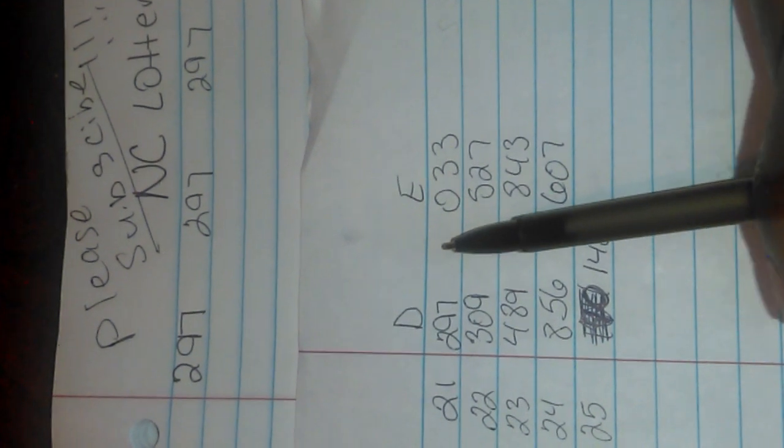We're going to start out with the 21st, and this is where we stopped at on my last video on how to win the lottery every time. We're going to start out with 297 and we're going to do our lottery math and go through, and then we're going to proof check our wins.